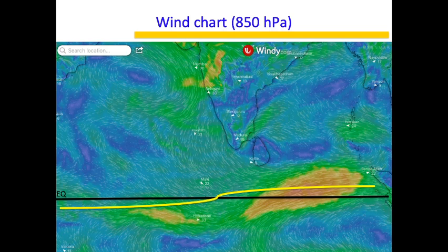The ITCZ can be located from your wind map. I usually look at the 850 hPa wind map because this is away from the boundary layers — it is the lowest level where boundary effects are not going to interfere. That is why I look at this particular chart. The ITCZ is nothing but the place where winds from the southern hemisphere and the northern hemisphere meet. One thing to remember is that the ITCZ doesn't have to be a straight line — it can be an undulating line.